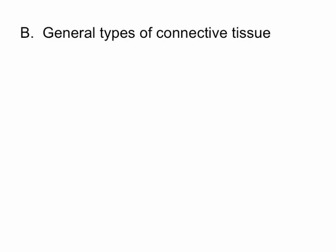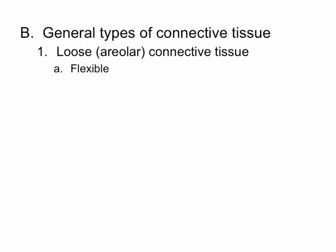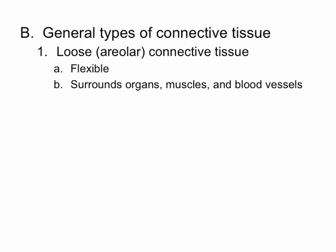There are a couple different types of connective tissues. One of them is loose connective tissue, sometimes called areolar connective tissue. This tissue is very flexible and allows quite a bit of movement. You can find it around organs, around your muscles, and around blood vessels. It holds those structures in place but still allows quite a bit of movement.